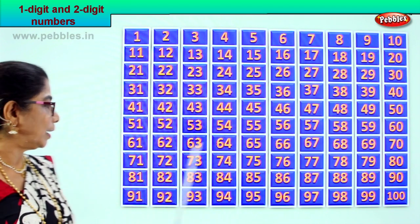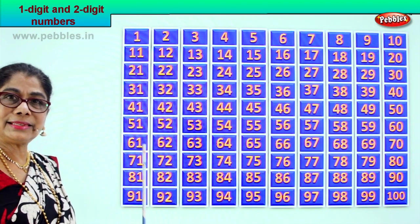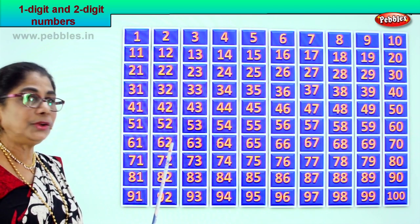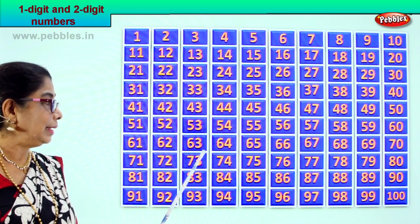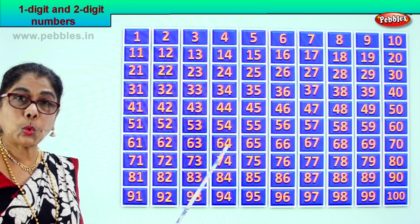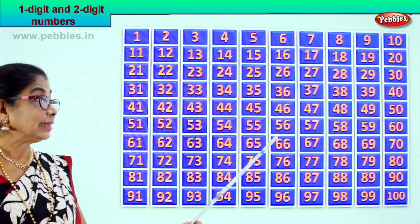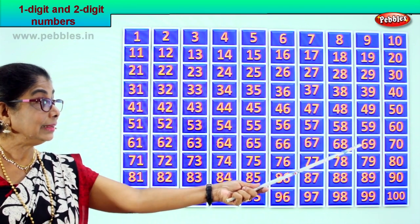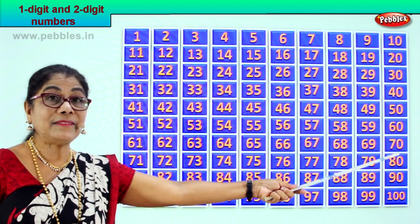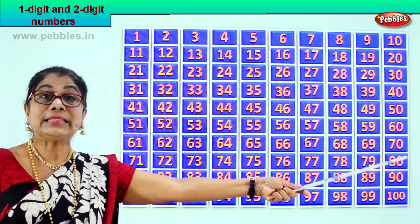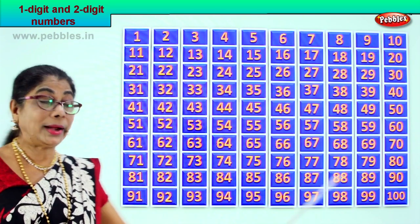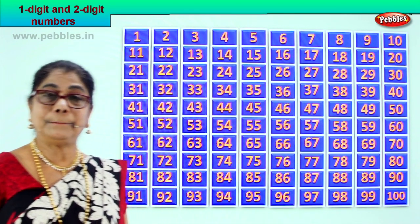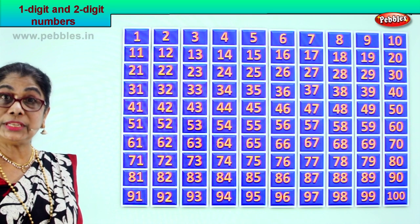All of them are two-digit numbers. 61, 62, 63, 64, 65, 66, 67, 68, 69, and 70 — which is 7 and 0. 61 to 70, all of them are two-digit numbers.